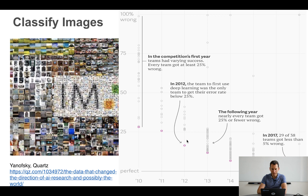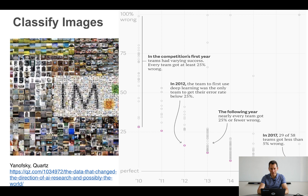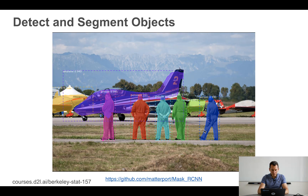The following year, almost everybody beat the 25 percent mark and things improved quite rapidly. By 2017, you can get accuracies in the five to ten percent range quite nicely. Of course, object recognition isn't the only thing you can do.